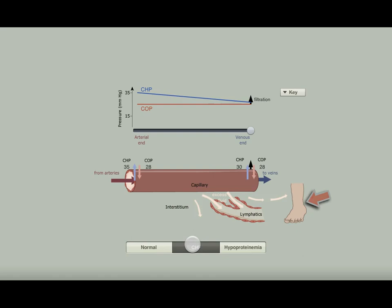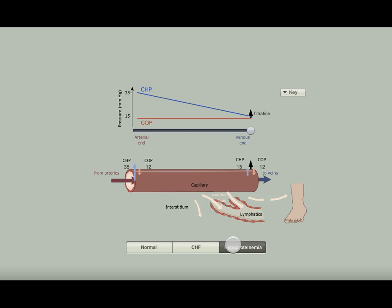You can tap on hypoproteinemia to see how the forces differ for conditions, for example certain renal diseases where a great deal of protein is lost from the blood. As for CHF, you can toggle back and forth between normal and hypoproteinemia to see the difference.